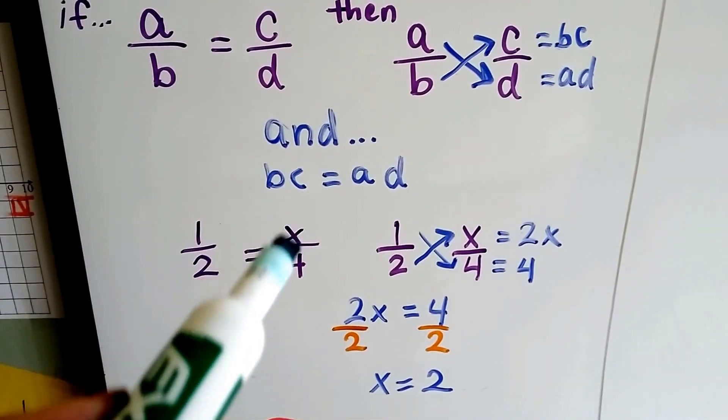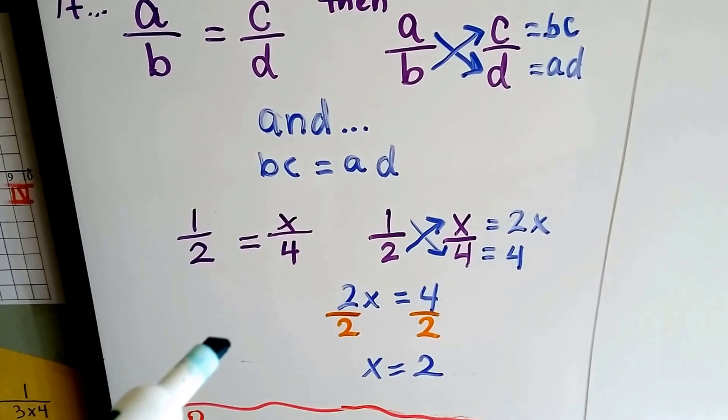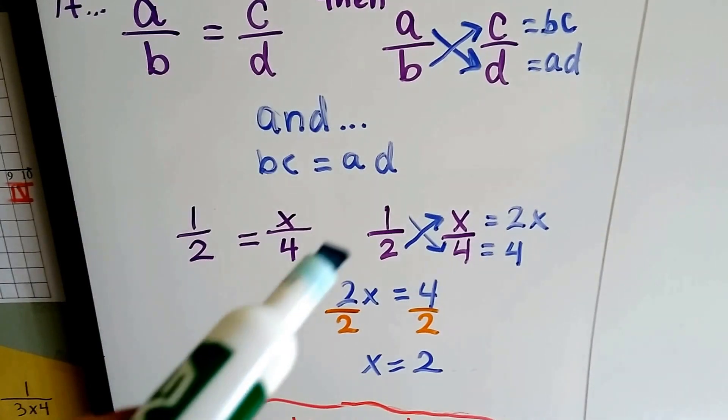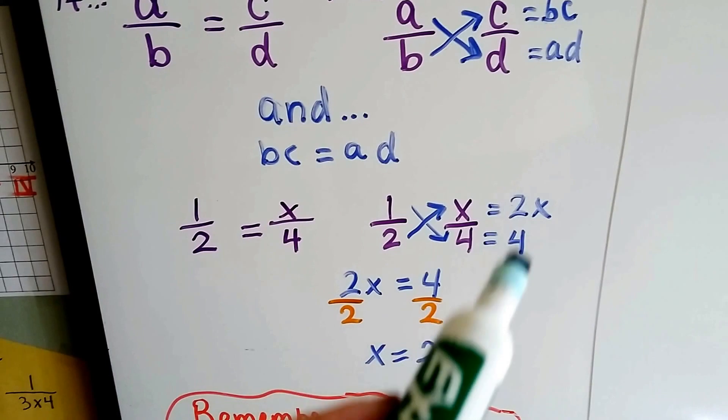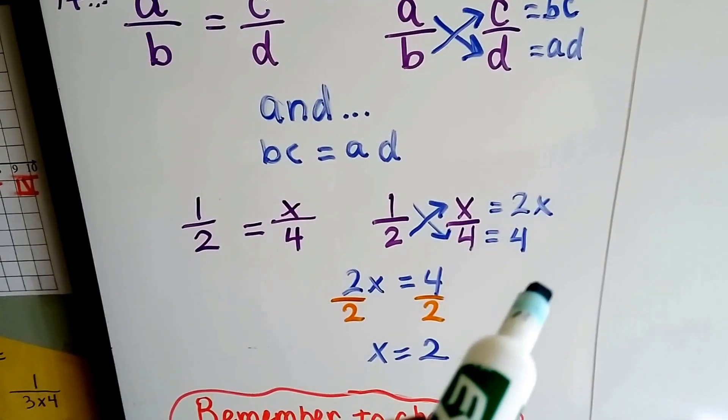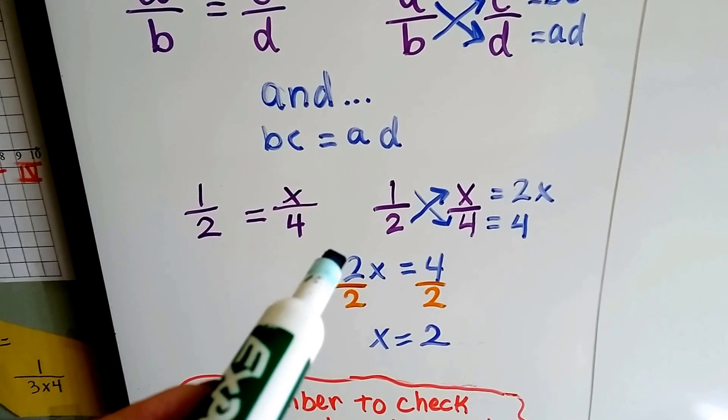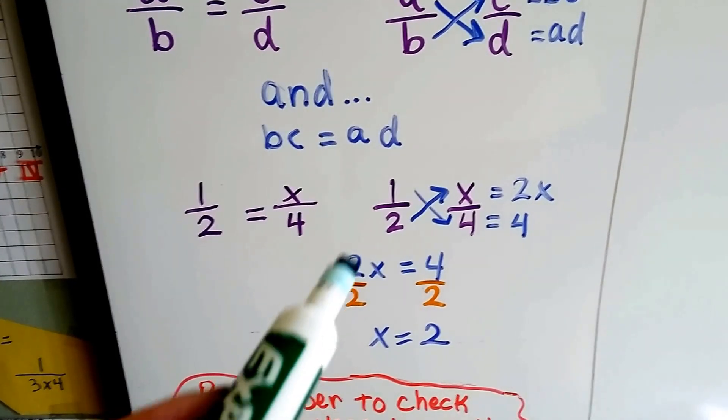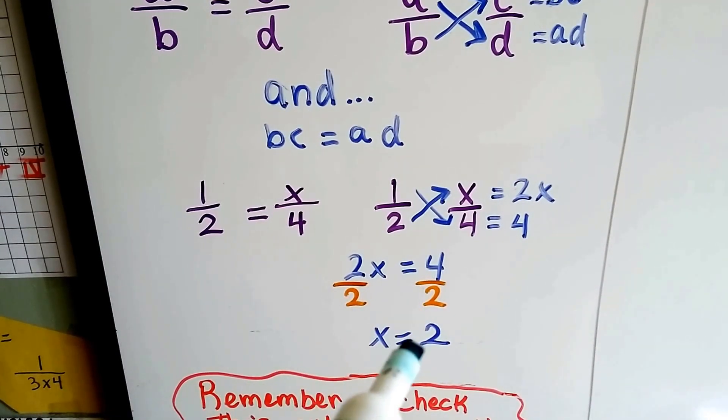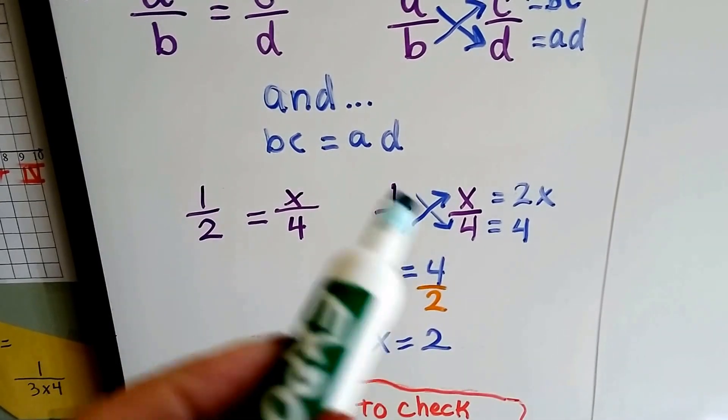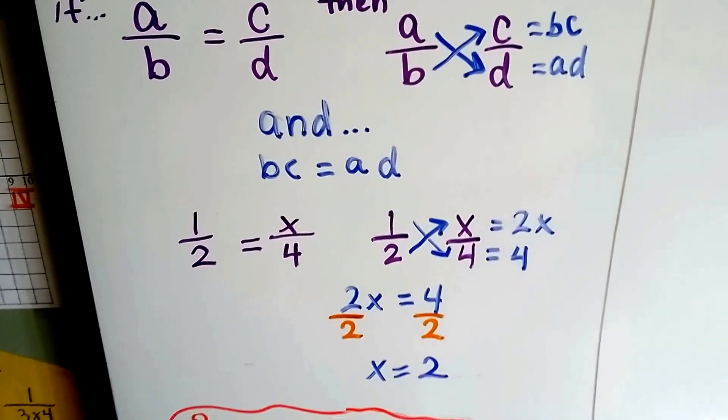We've got one-half equals blank over four. I'm sure you can figure this one out, but I'm using easy numbers so that you can see what I'm doing. This would be one times four is four and two x. And the two x and the four are going to be equivalent. Two x equals four. We can divide both sides by this coefficient two. And that creates the identity property, our friend, the invisible one. So we just have an x and four over two is two. So we know x equals two. That's how you cross-multiply and make equivalent products so that you have an equation.